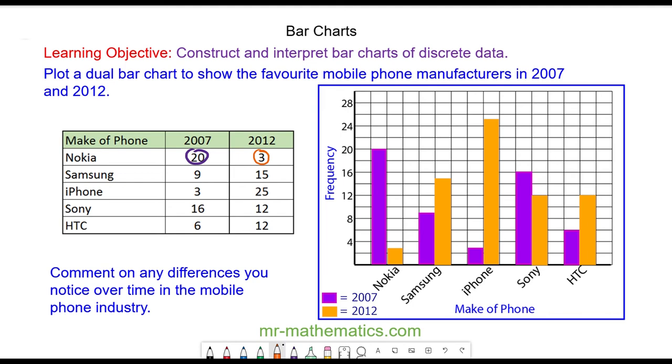The differences over time show that Nokia and Sony decreased in popularity, whereas iPhone and Samsung increased. HTC also increased in popularity.